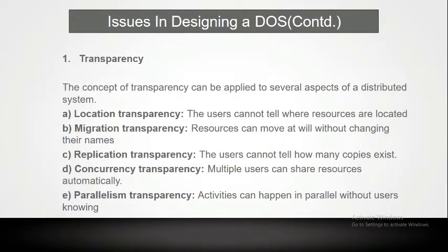The first issue is transparency. The concept of transparency can be applied to several aspects of distributed systems. In location transparency, the user cannot tell where the resources are located. In migration transparency, resources can move at will without changing their names. In replication transparency, the user cannot tell how many copies exist.